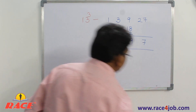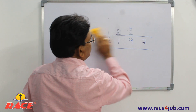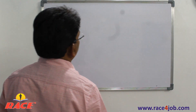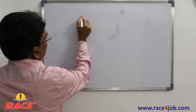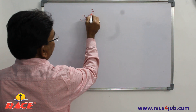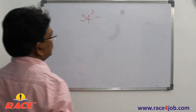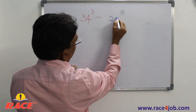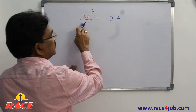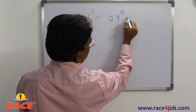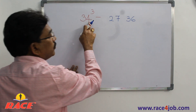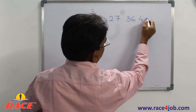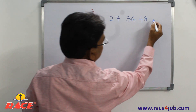Now let us take another example — 34 cubed. Write numbers in four places: first digit cubed, 3 cubed is 27. Then 3 squared into 4 — 9 into 4 is 36. Next, 4 squared into 3 — 16 into 3 is 48. Next, 4 cubed is 64. So the four positions are: 27, 36, 48, 64.